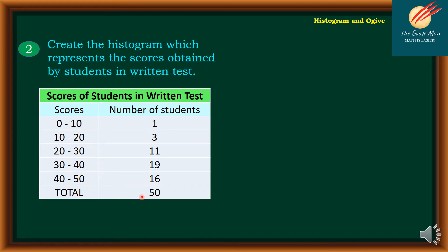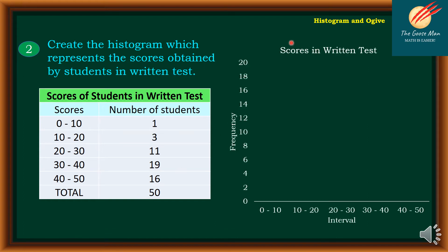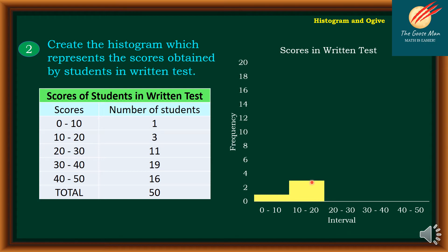To create the histogram, the first thing I'll do is write the title: 'Scores in Written Tests.' On the x-axis, I'll write the intervals: 0 to 10, 10 to 20, 20 to 30, 30 to 40, and 40 to 50. On the y-axis is frequency, with intervals of 2 starting from 0 to 20. I'll plot: from 0 to 10 I have 1, from 10 to 20 I have 3, from 20 to 30 I have 11. As you can see, there are no spaces in between.